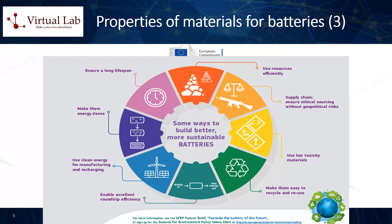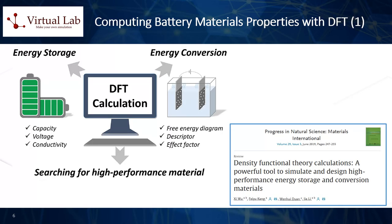In terms of specific material properties, it depends on whether you are discussing anodes, cathodes, or electrolytes, as different properties are prioritized in each case. For instance, a lithium cobalt oxide cathode is valued for its high energy density, while a graphite anode is valued for its cycling stability and conductivity. Let us now address in more detail how DFT computational techniques can be employed to compute physical and chemical properties of materials relevant for batteries and energy storage applications.